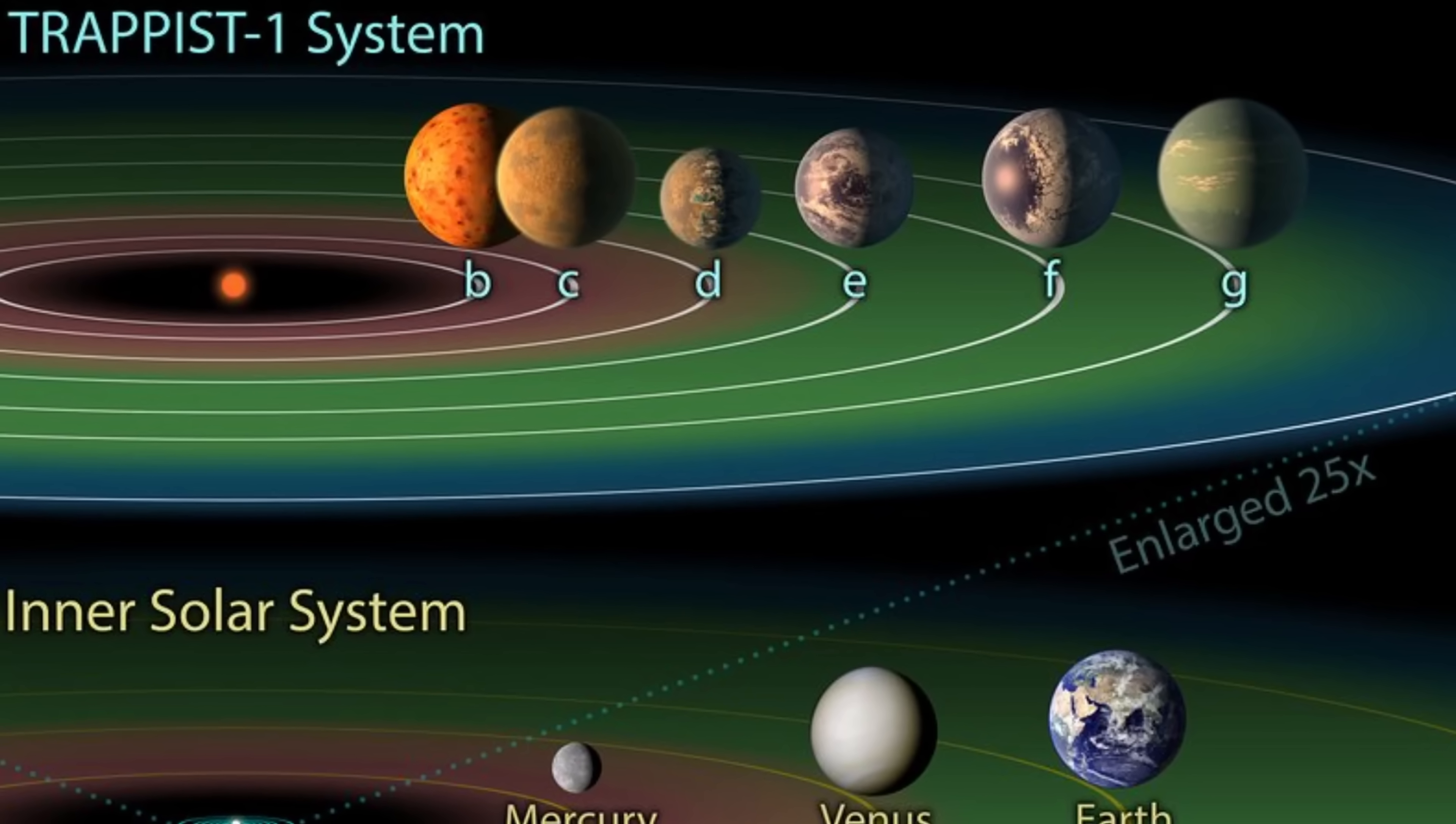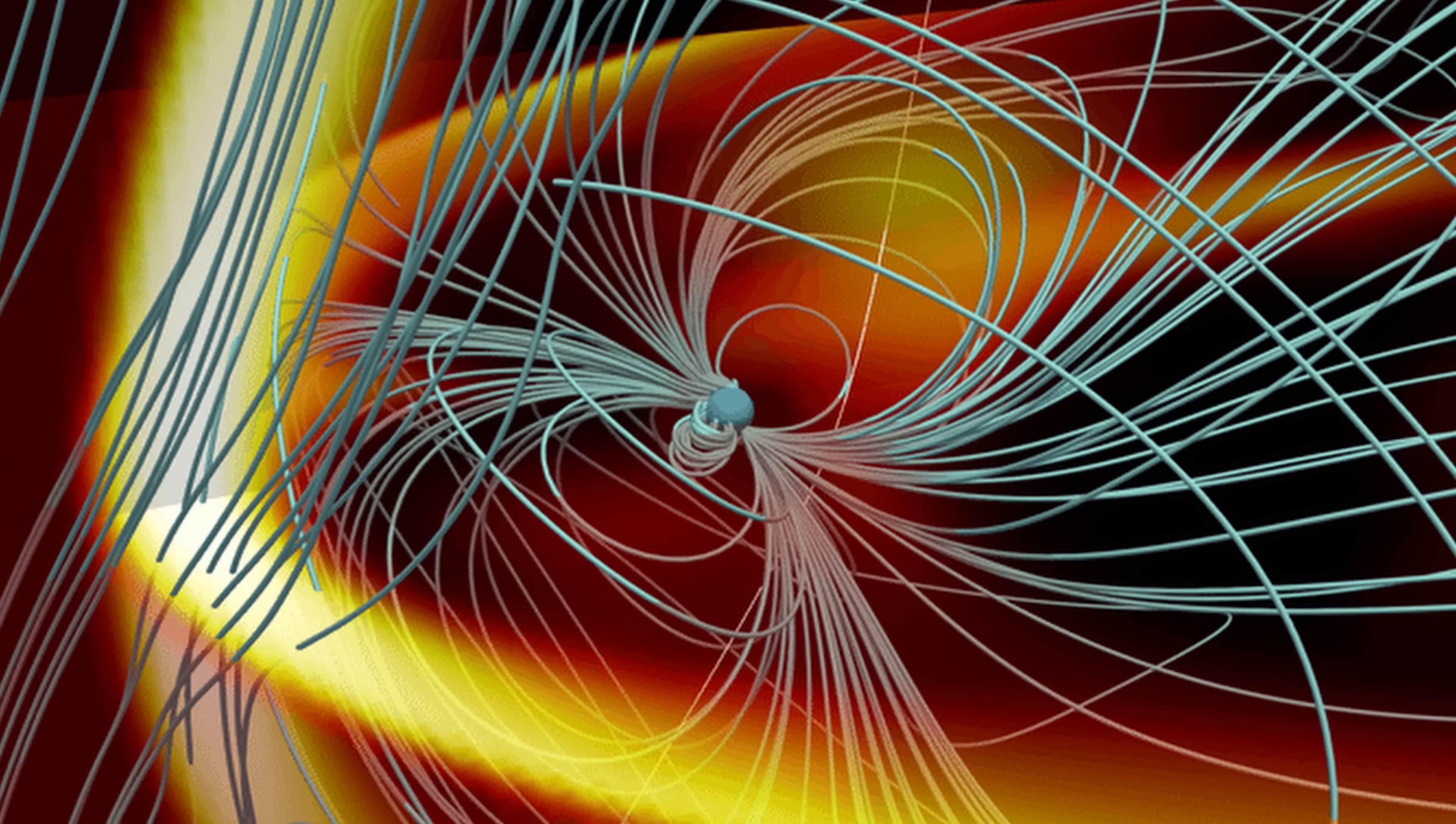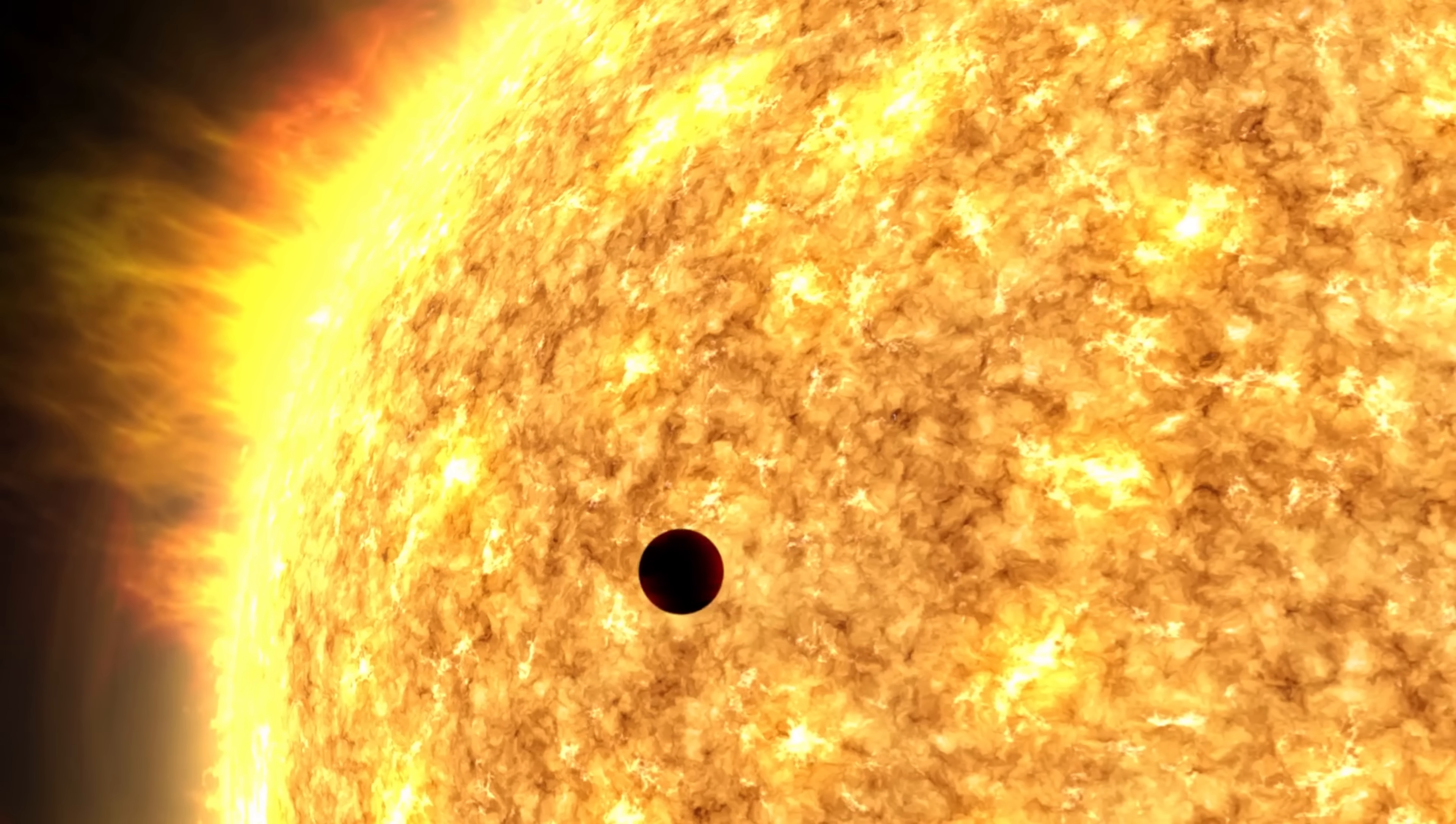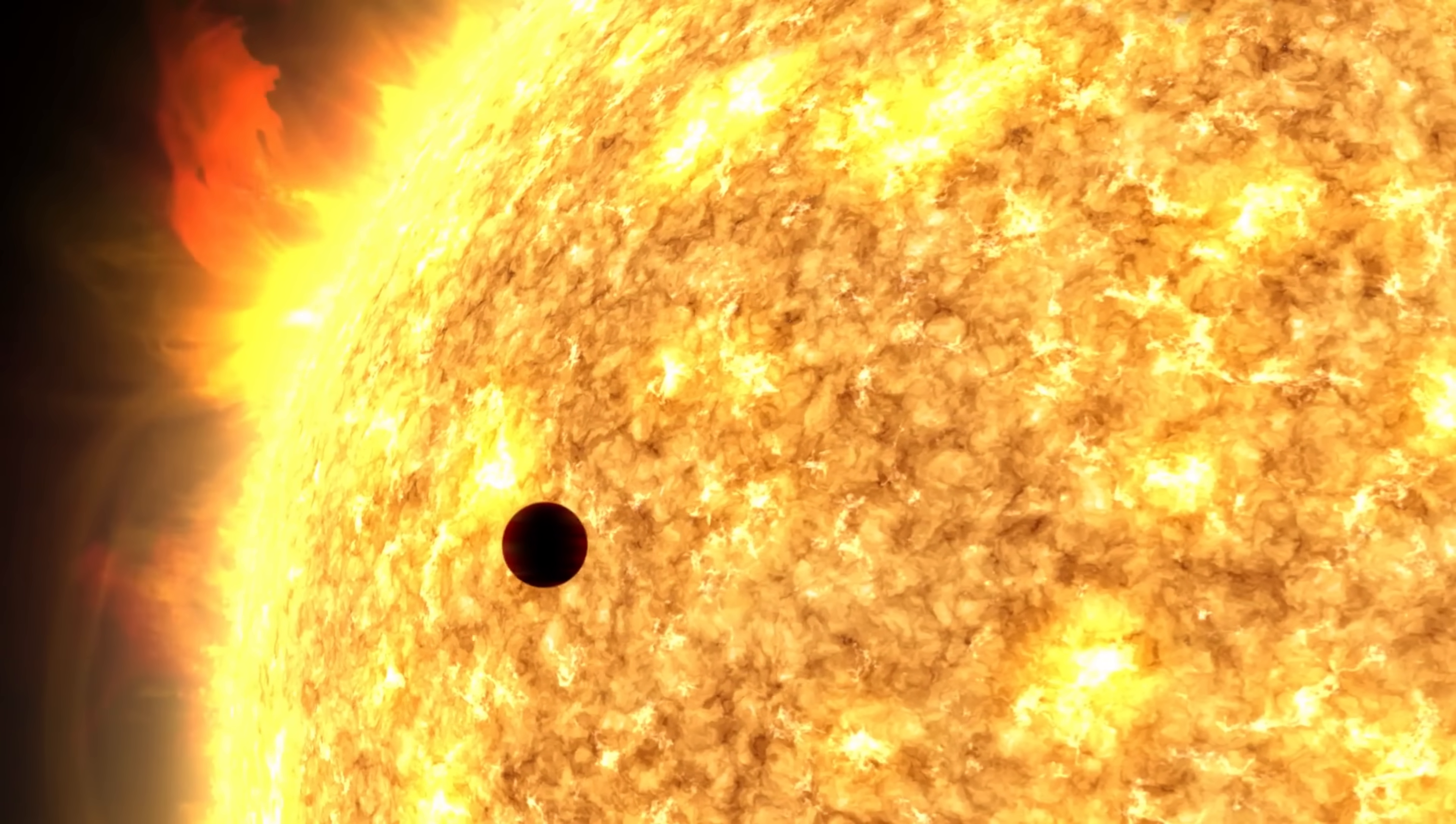For example, in the famous TRAPPIST-1 system, one of the propositions was that maybe the planetary and the star magnetic fields are essentially kind of enveloped, which possibly results in some really bizarre effects such as the stripping of the atmospheric layer from the planets because there's basically no magnetic field protecting anything from powerful eruptions that come from these stars.